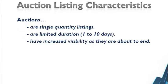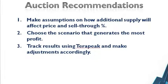To wrap things up with auctions, we recommend a three-step process. One, make assumptions on how additional supply will affect price and sell-through percentage. Two, choose a scenario that generates the most profit. And three, track results using Terapeak and make adjustments accordingly.